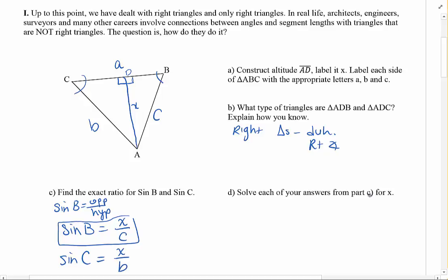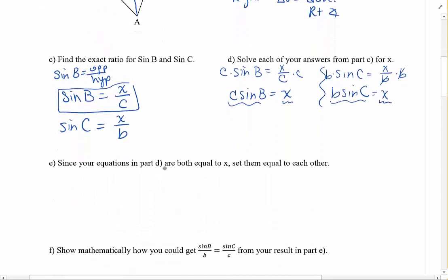And then it says solve each of your answers in part C for X. What does that mean, solve for X? Well, solve for X means get it in X equals form. So if sine B equals X over C, I'm going to multiply both sides by C and say C sine B equals X. And then if I have sine C equals X over B, I can multiply by B and get X equals B sine C.